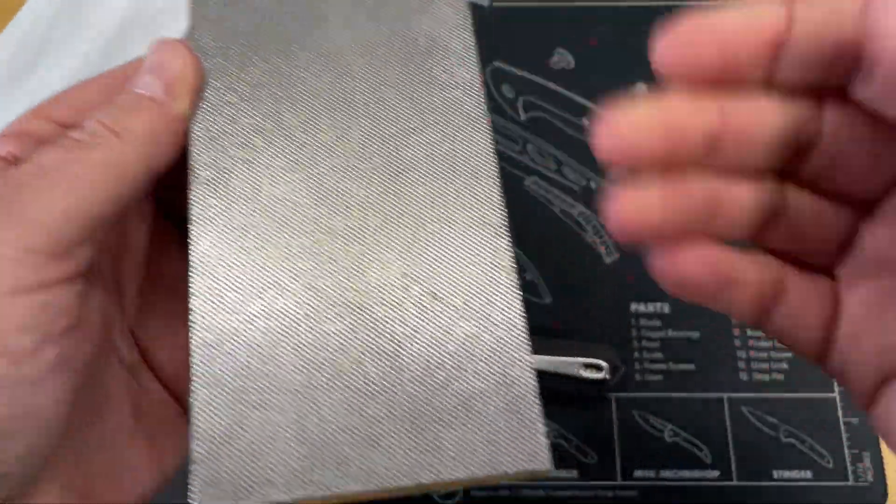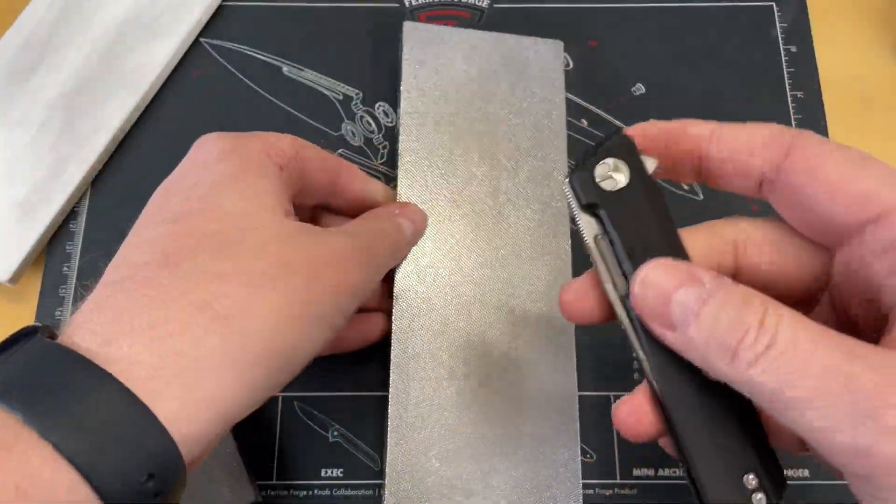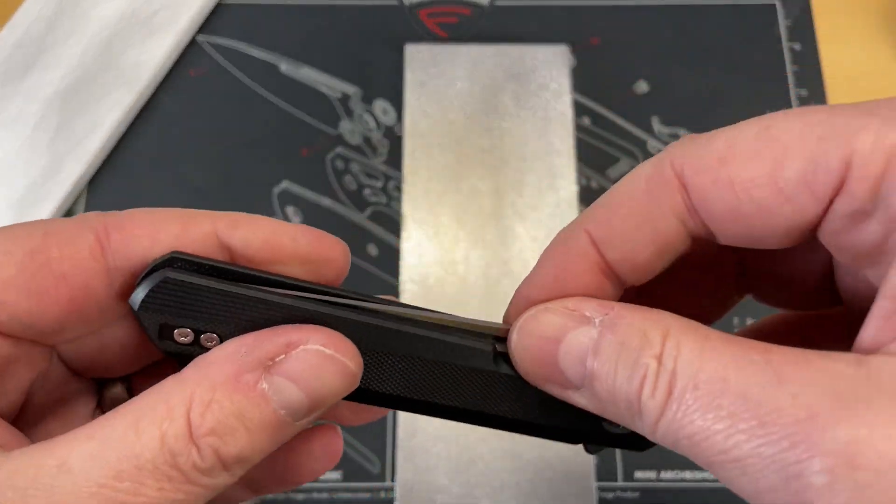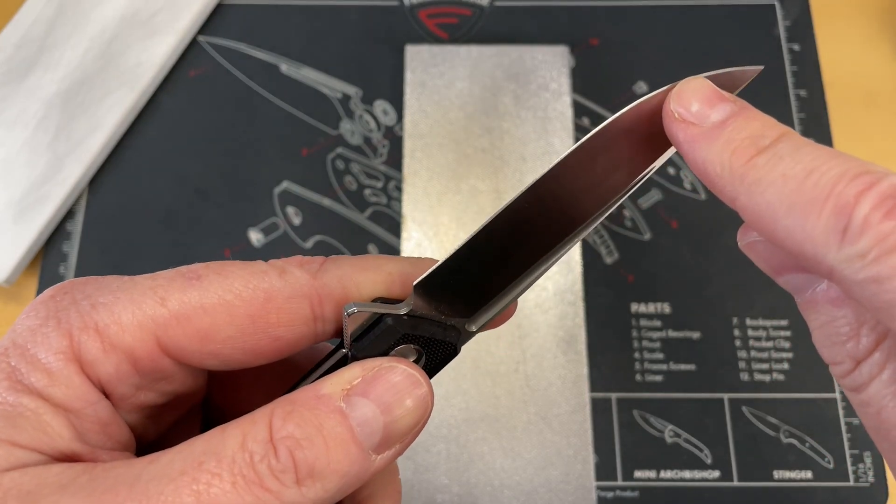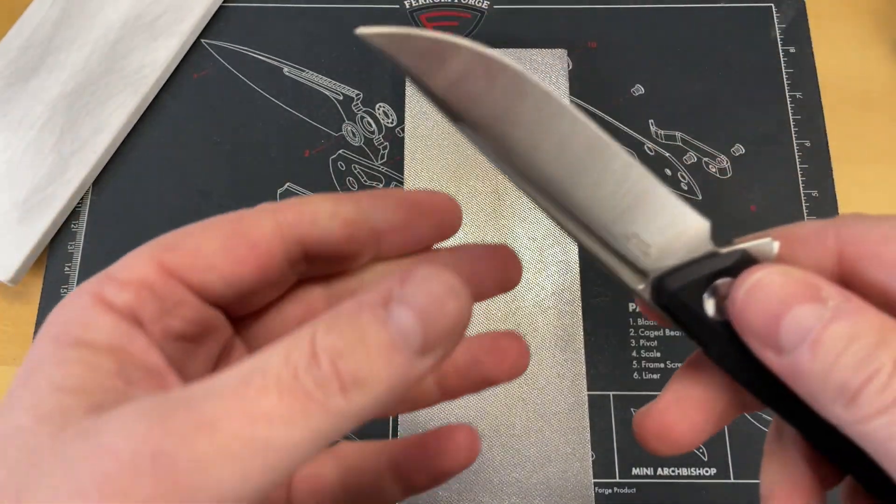So basically what you have is, we'll look at this one, you have abrasives that are going to cut into the material of the steel because they're harder than the steel. What's going to happen is you're removing material at that very edge. But that's not the only thing that's happening.